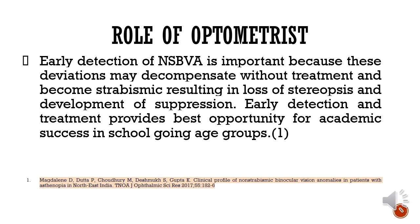Early detection provides a better opportunity for academic success, especially in the school-going age group of 4 to 14 years, which is highly affected due to their lifestyle of near work, education, phones, and computers. For example, a child cannot read or write for more than half an hour because he is losing fusion and cannot concentrate - this hampers his progress. Early detection means such conditions will not deteriorate into an intermittent or constant tropia.